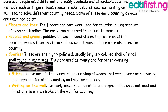Small sticks. These include canes, staves, and shaped woods that were used for measuring land area and for other counting and measuring needs. Writing on the wall: in early ages, man learned to use objects like charcoal, mud, and limestone to write strokes on the wall for counting.